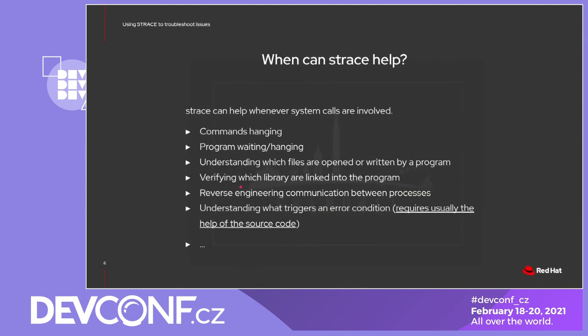Let's see when strace will help. Strace will help whenever syscalls are involved — when a command is hanging or slow, or when a process seems to hang waiting for something on the network. Additionally, it's very helpful when you want to understand what a program does. For example, you can see which files are being opened or written, which libraries are being loaded, etc. You can also observe the communication between processes — for example, monitor systemctl and systemd and see how they talk to each other to do some kind of reverse engineering.